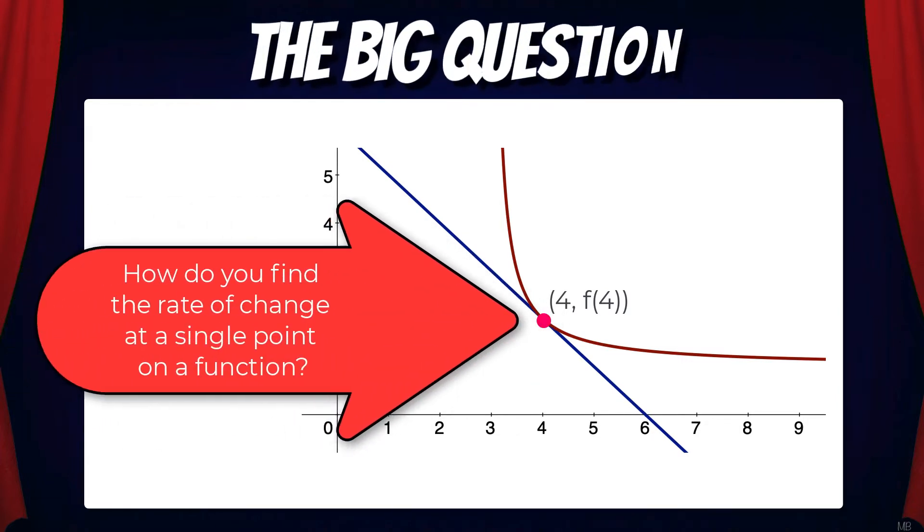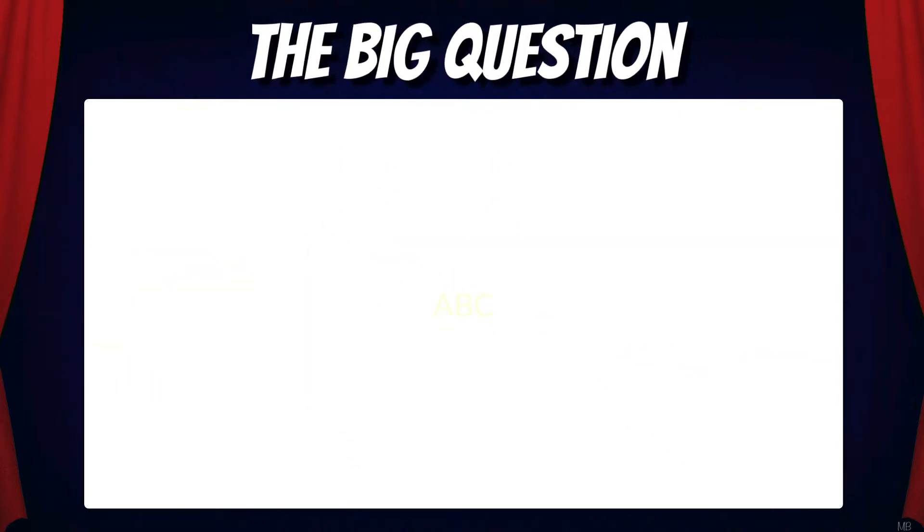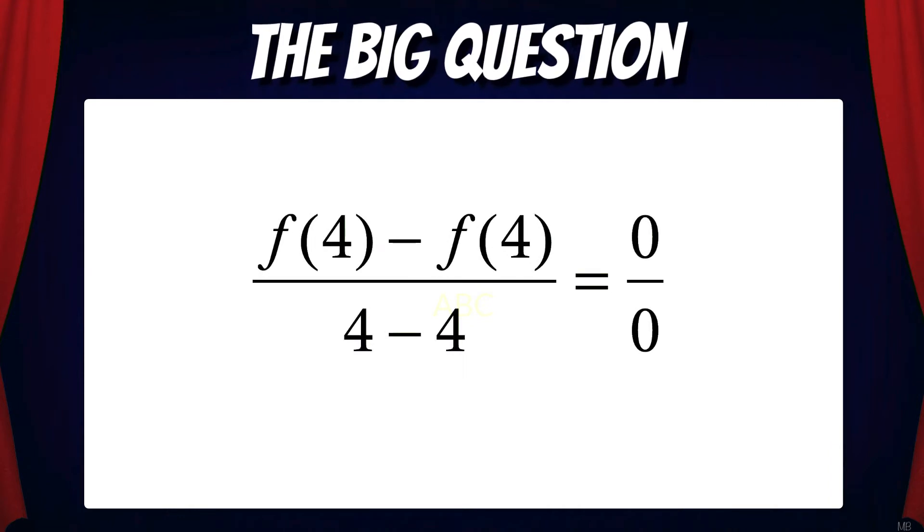Recall the big question from the last video. How do you find the rate of change at a single point on a function? The only tool we have right now is the Average Rate of Change equation. And if we apply that, we get f(4) minus f(4) over 4 minus 4, which is 0 over 0. And that's an indeterminate form in calculus, which means we have more work to do.